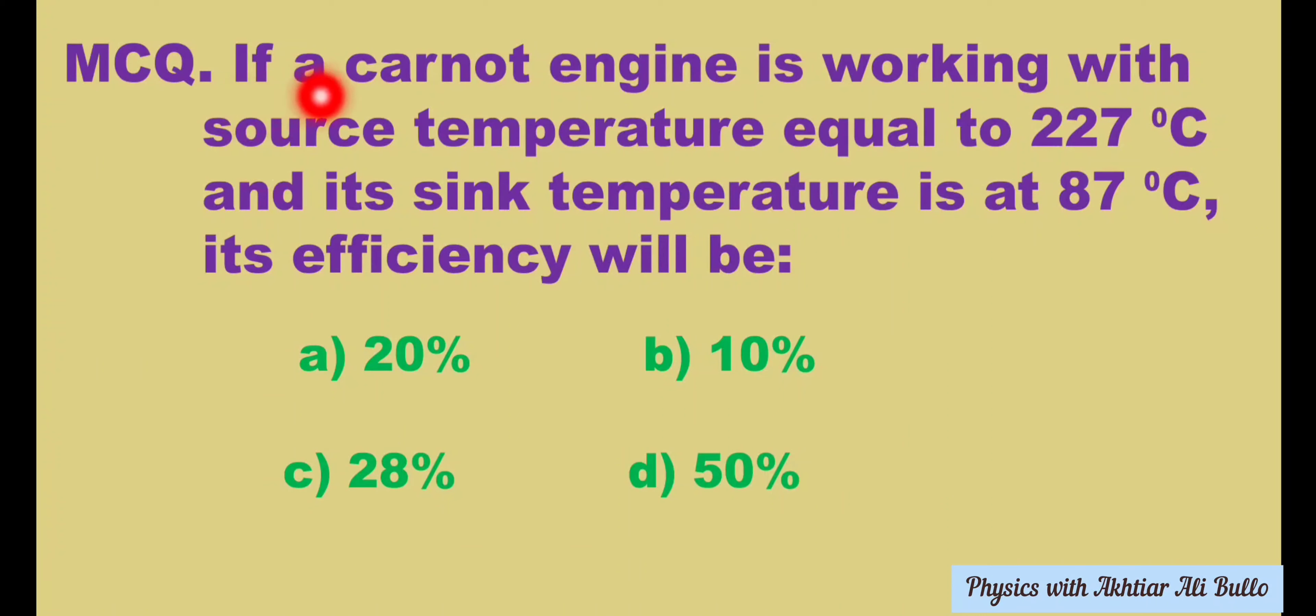If a Carnot engine is working with source temperature equal to 227 degrees Celsius and its sink temperature is at 87 degrees Celsius, its efficiency will be: a) 20%, b) 10%, c) 28%, d) 50%.